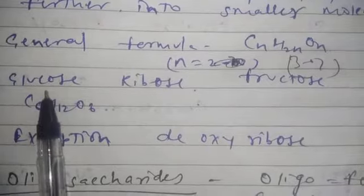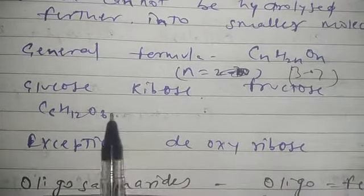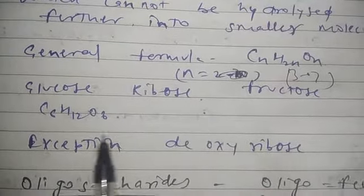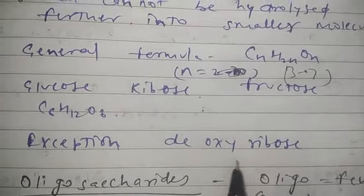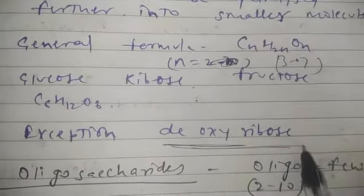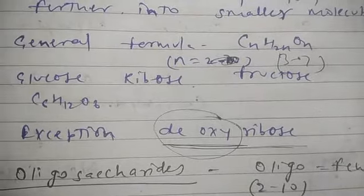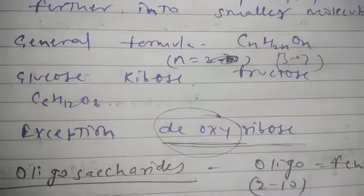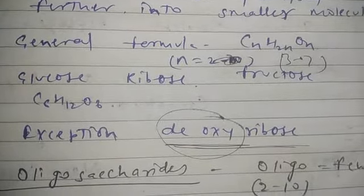Examples of monosaccharides include glucose, fructose, ribose, deoxyribose, etc. Note that deoxyribose is an exception — it does not follow this formula because 'deoxy' means one oxygen is removed from it. So deoxyribose does not follow the general formula CnH2nOn.